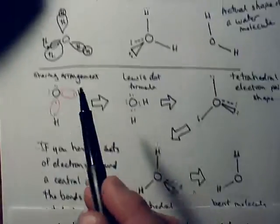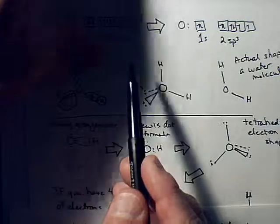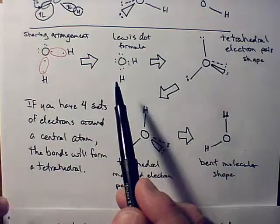So, the full valence level means all the orbitals are full, right? Which for most atoms, except those in the first row, means you've got to have eight electrons.